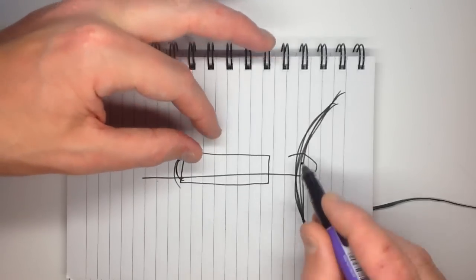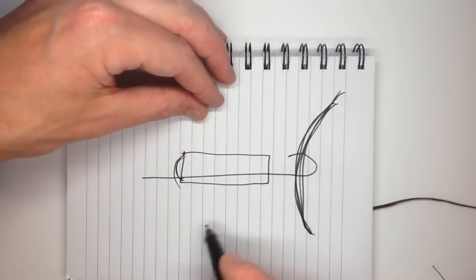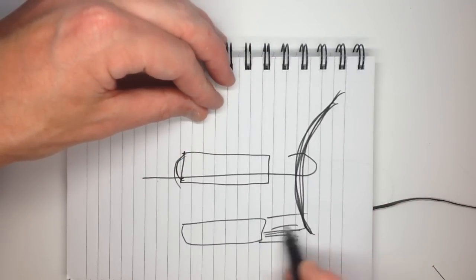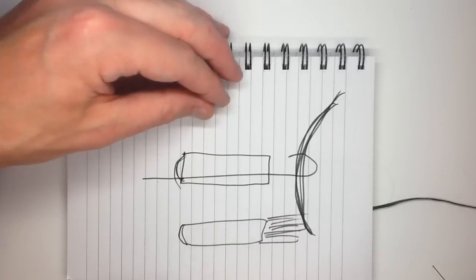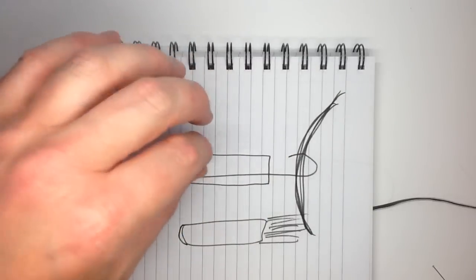Then shrink it down. So you end up with basically the heat shrink with just the tips coming out, and I'll show you what's involved in that.